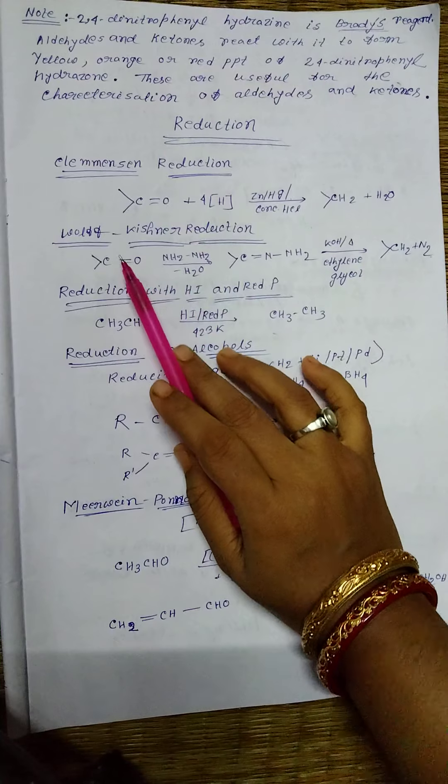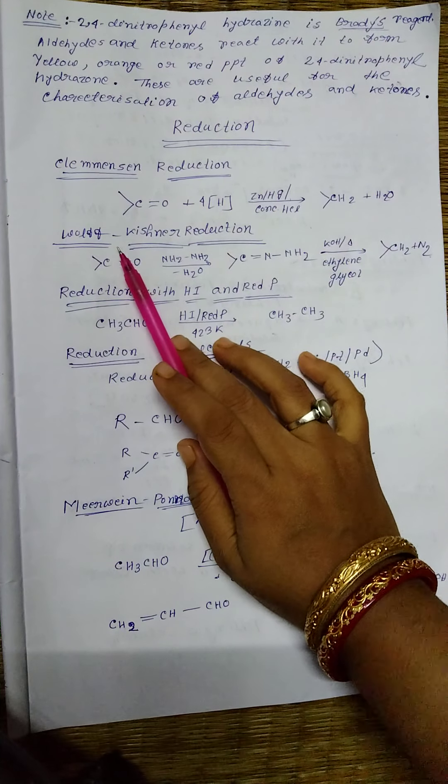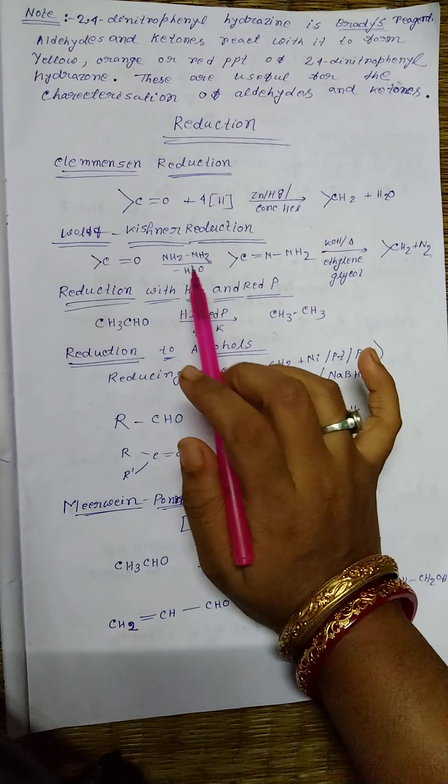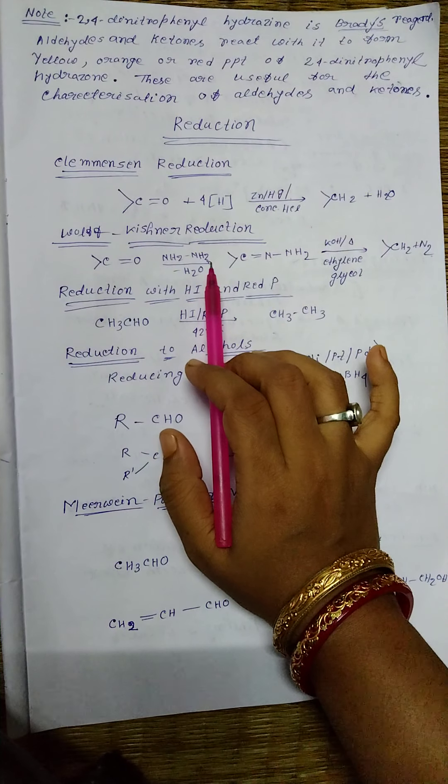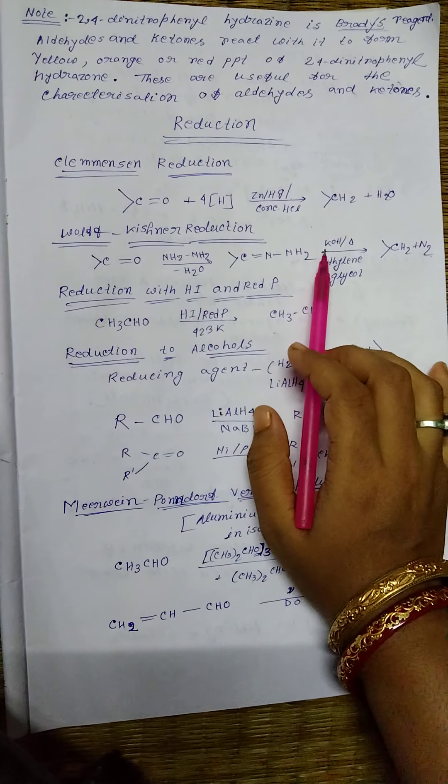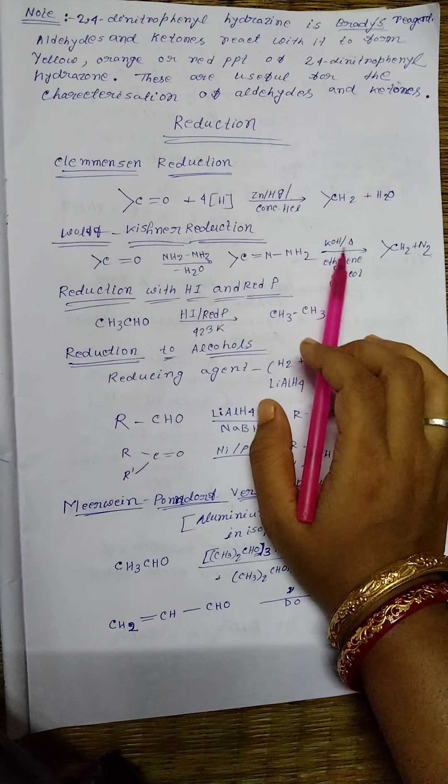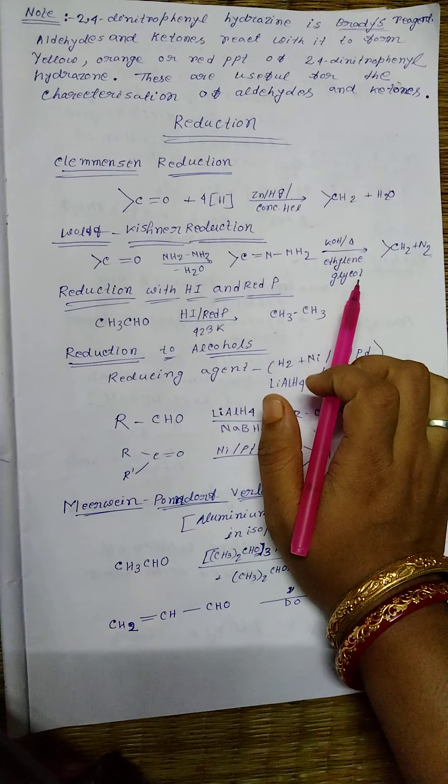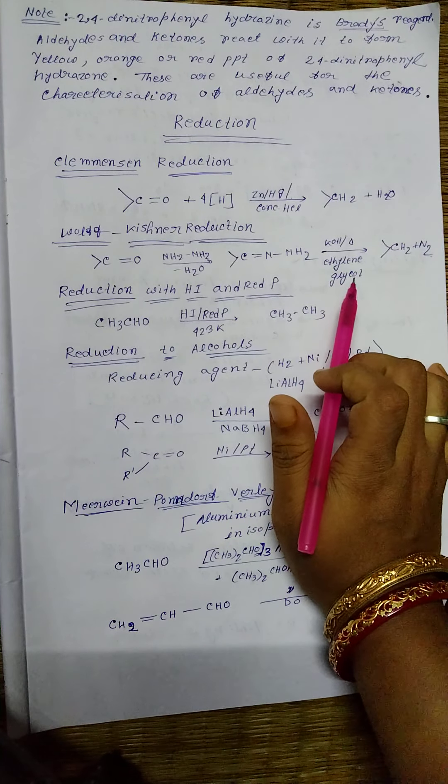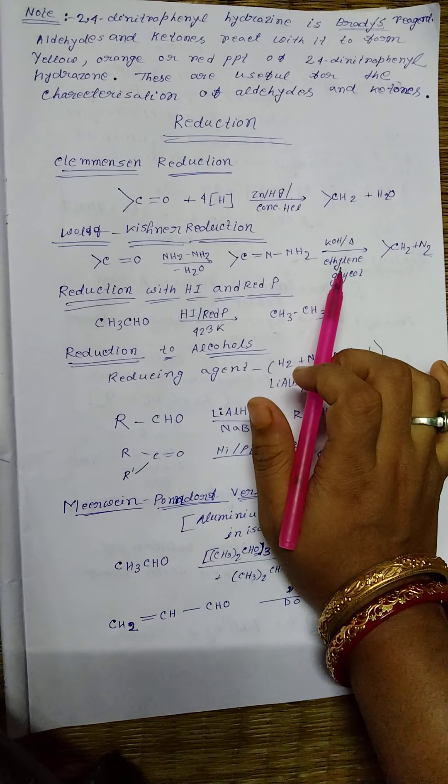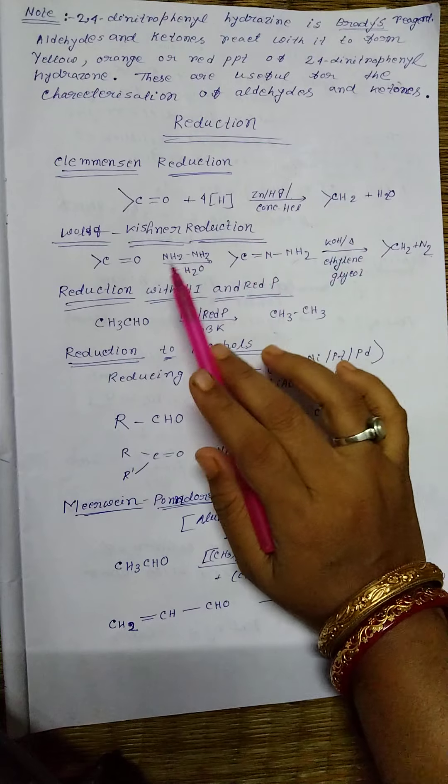Next, another important reduction reaction is known as Wolff-Kishner reduction reaction. Hydrazine is used as a reagent followed by KOH heat and ethylene glycol solution.